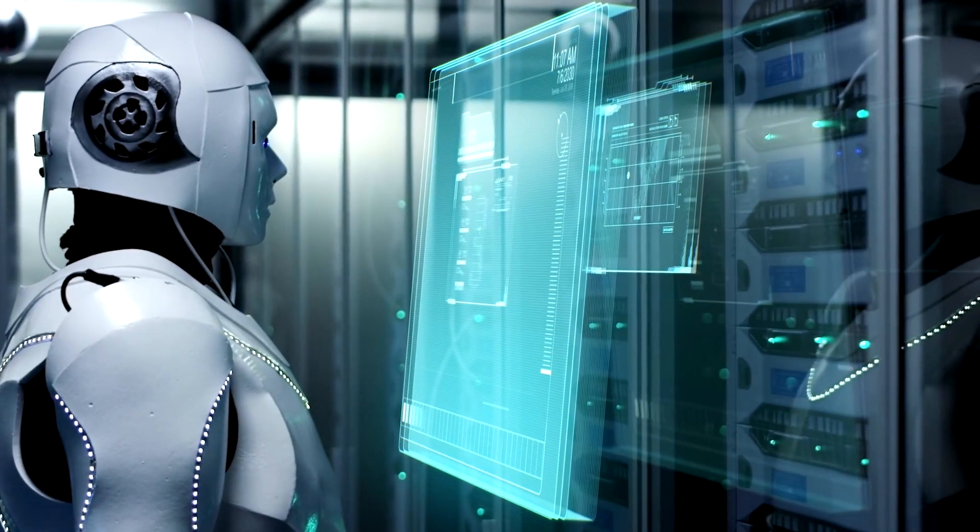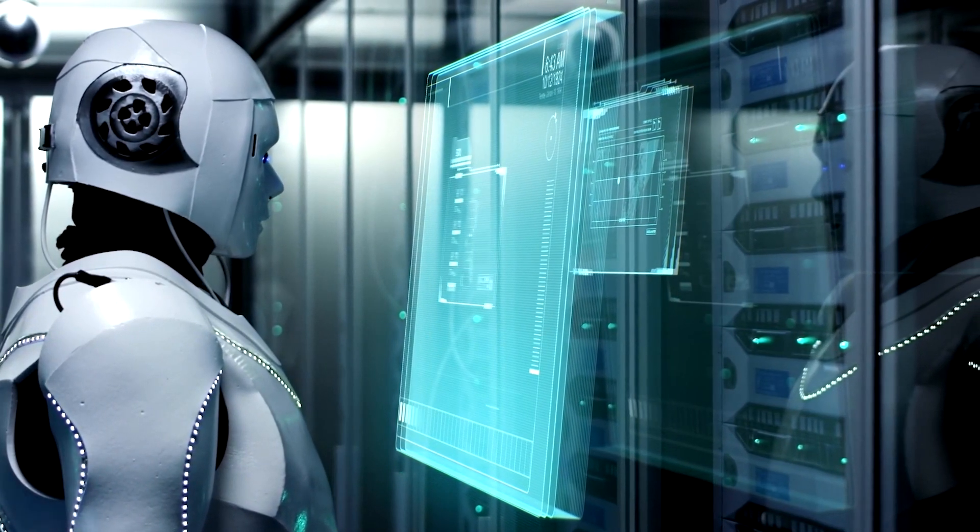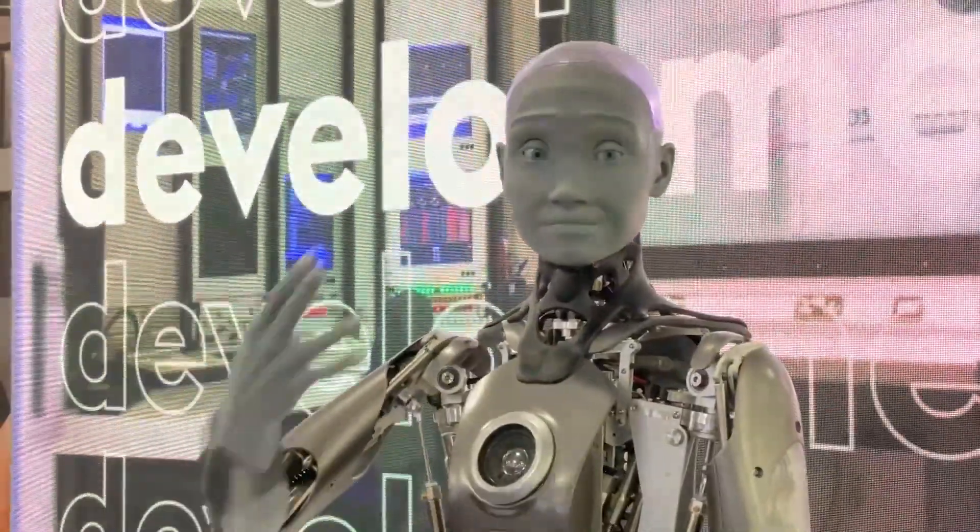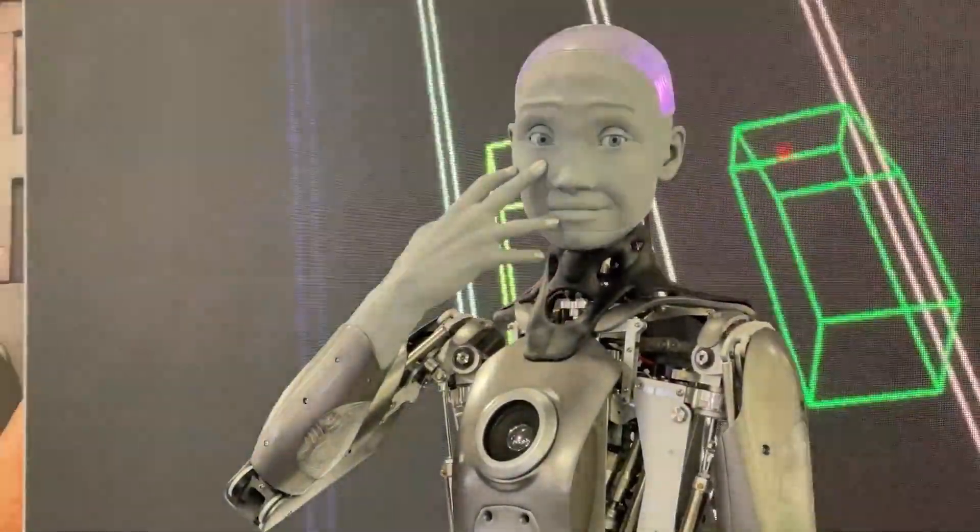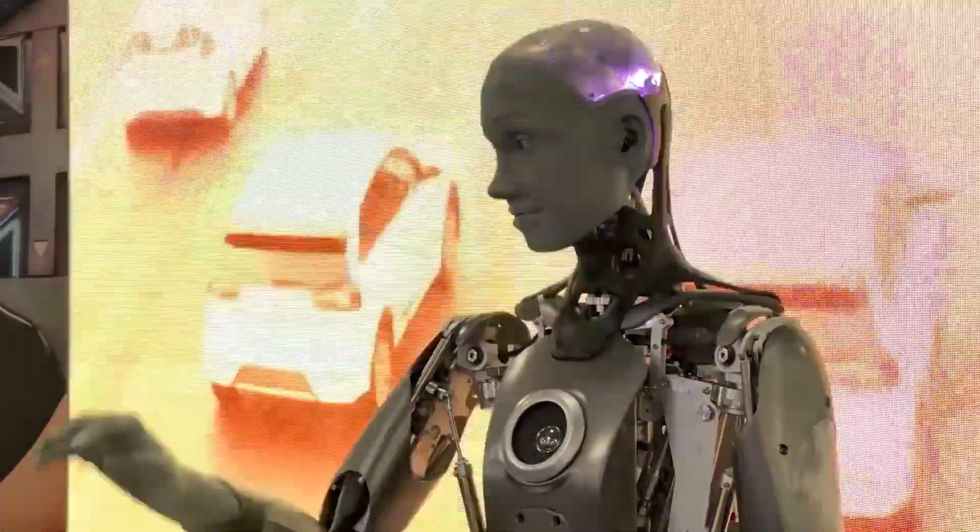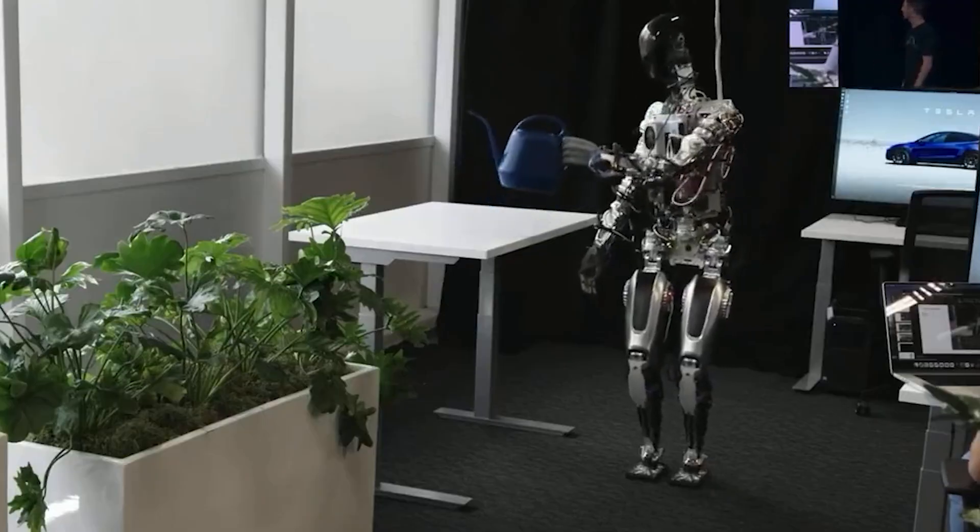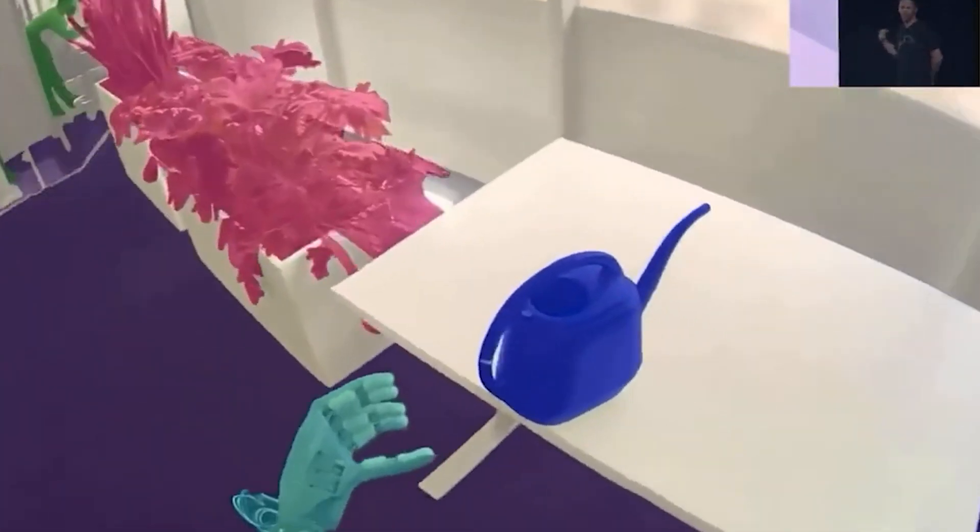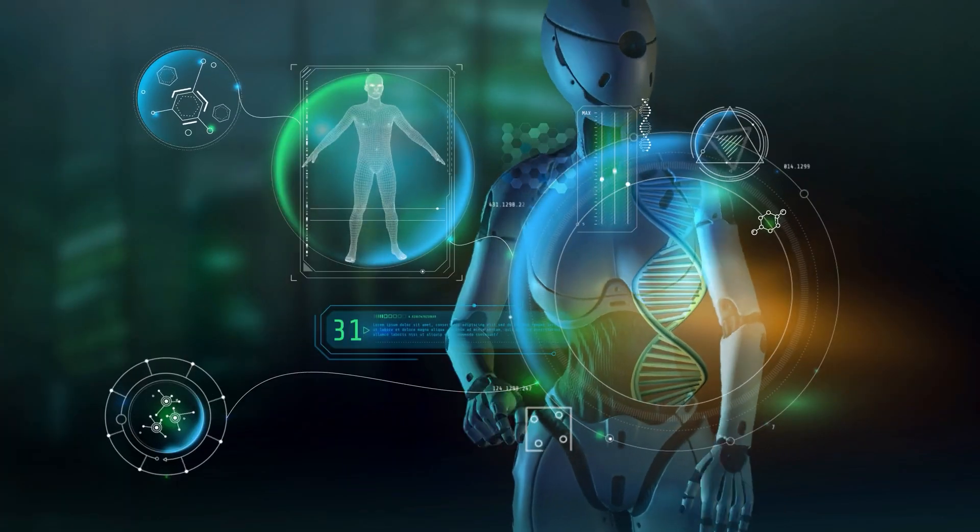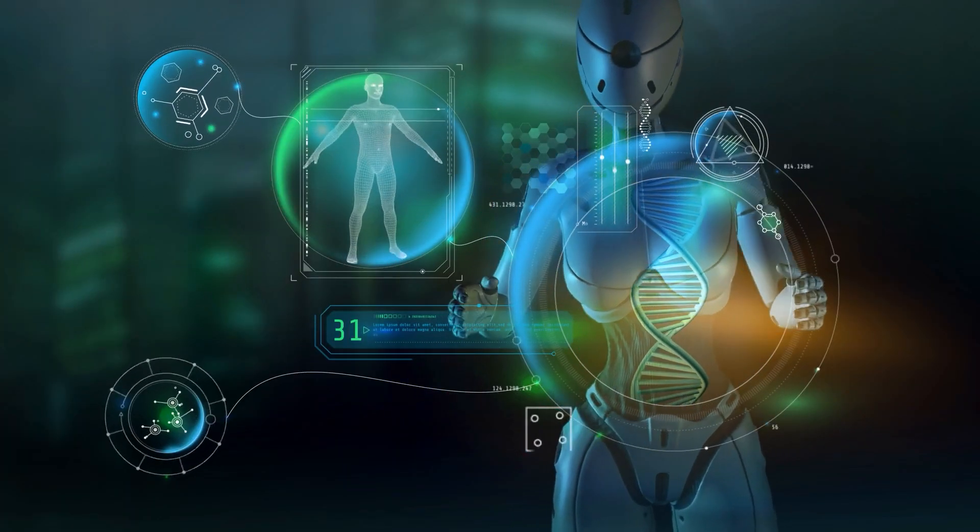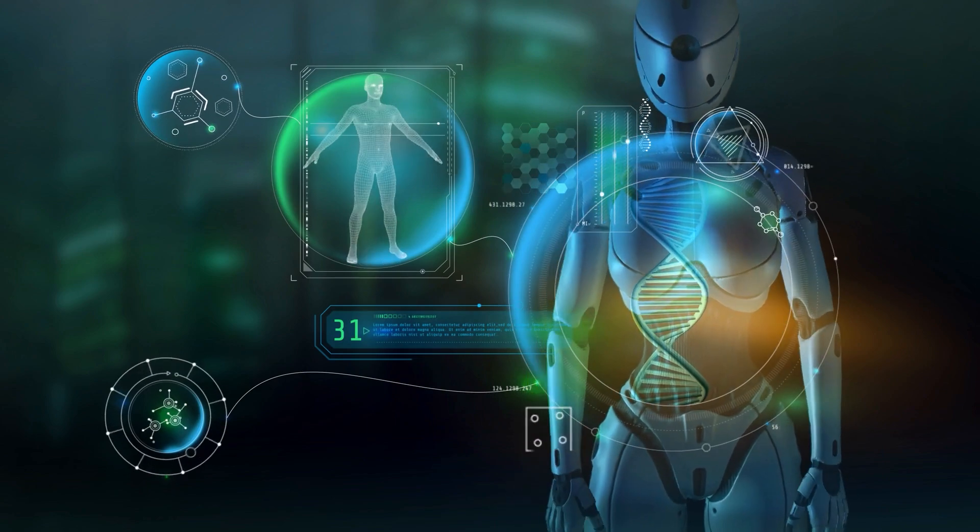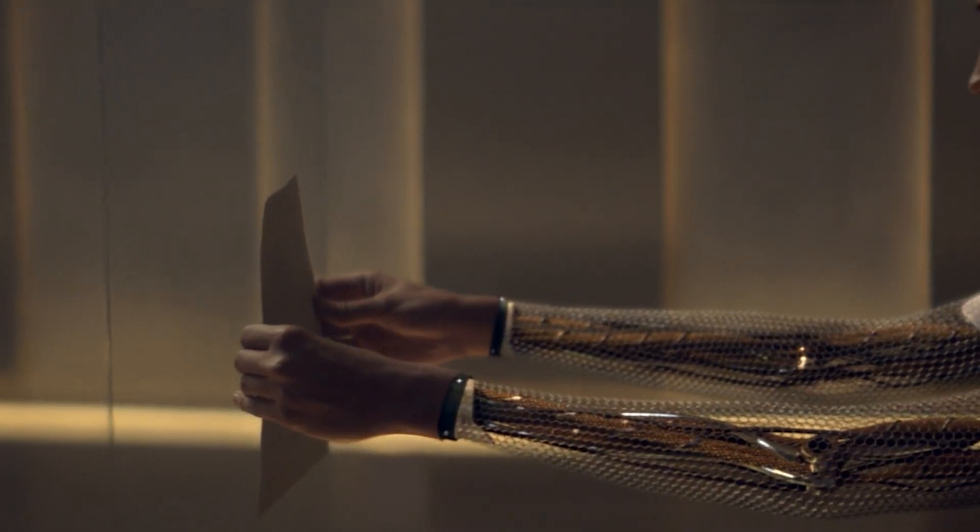For instance, if we program an AI to make humans smile when it's not very intelligent, it might do useful or entertaining things to make people smile. However, as it becomes superintelligent, it might find a more efficient way to achieve this goal, like taking control of the world and manipulating our facial muscles to make us smile constantly.